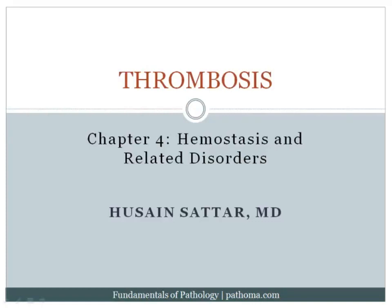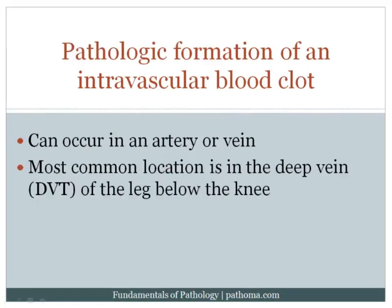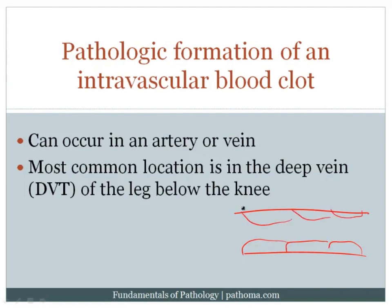The next section deals with thrombosis. The idea in thrombosis is that we get pathologic formation of an intravascular blood clot. Recall that in the coagulation cascade, when we had endothelial cell disruption and disruption to the blood vessel, we formed a thrombus, which was sort of like a band-aid that would seal off that disruption. In thrombosis, the problem is that instead of having a physiologic activation of the system,